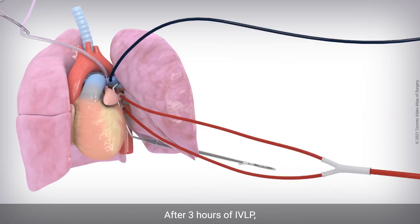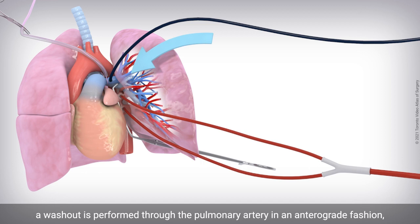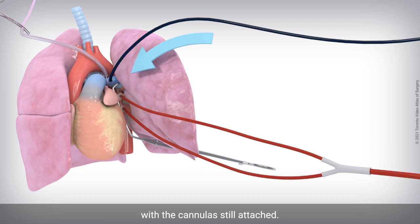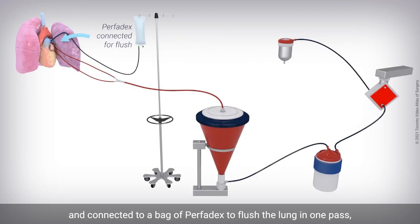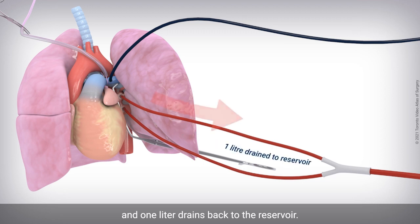After three hours of IVLP, a washout is performed through the pulmonary artery in an anterograde fashion, with the cannulas still attached. The circuit is disconnected from the chemo and connected to a bag of perfidex to flush the lung in one pass, and one liter drains back to the reservoir.